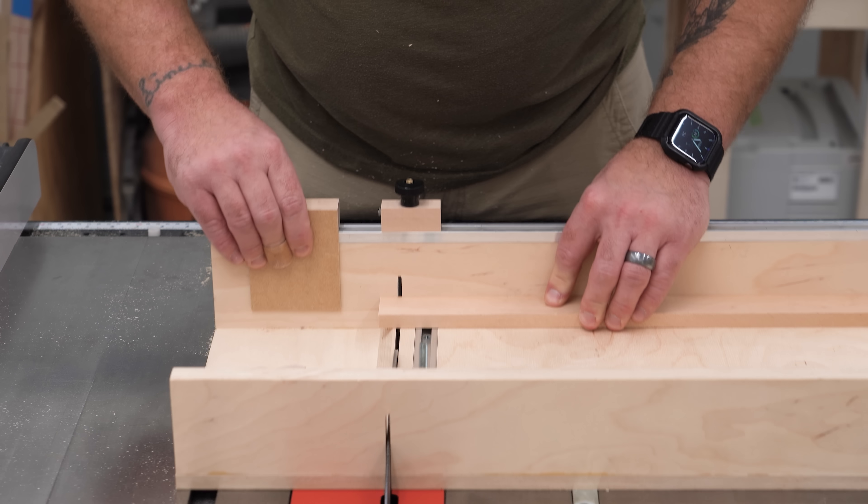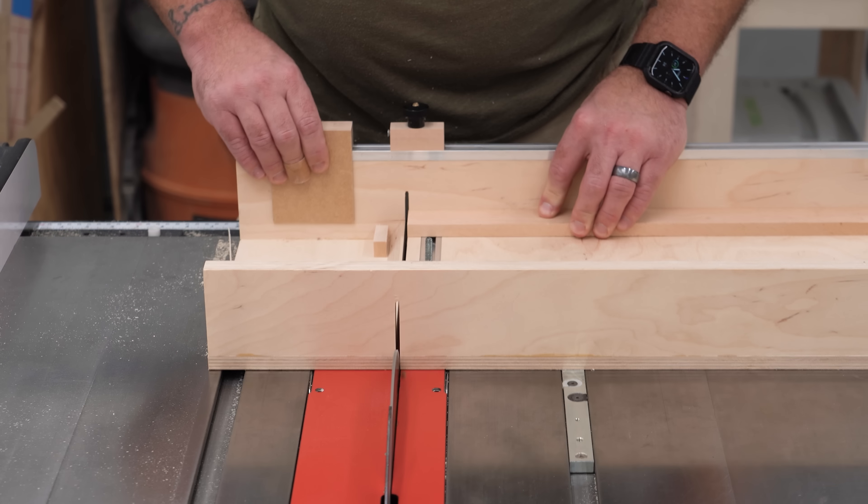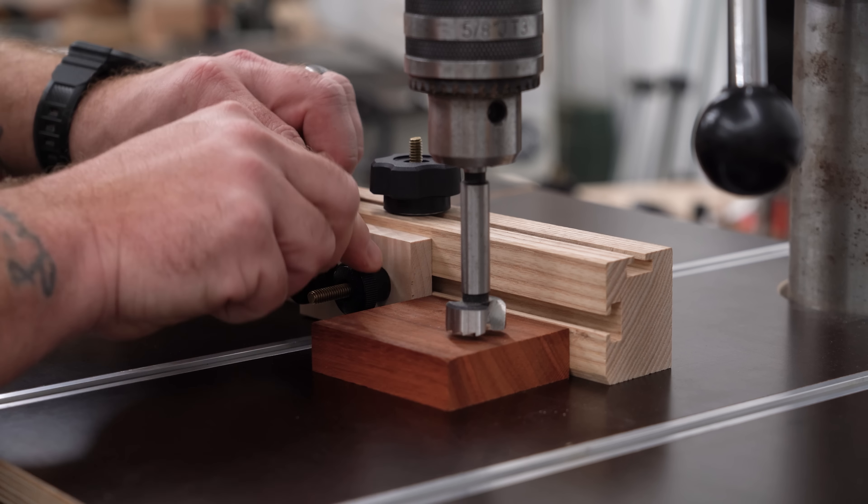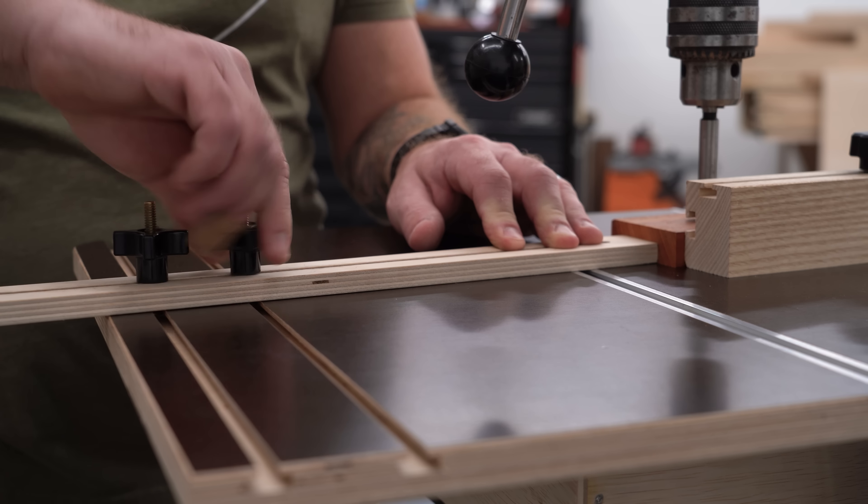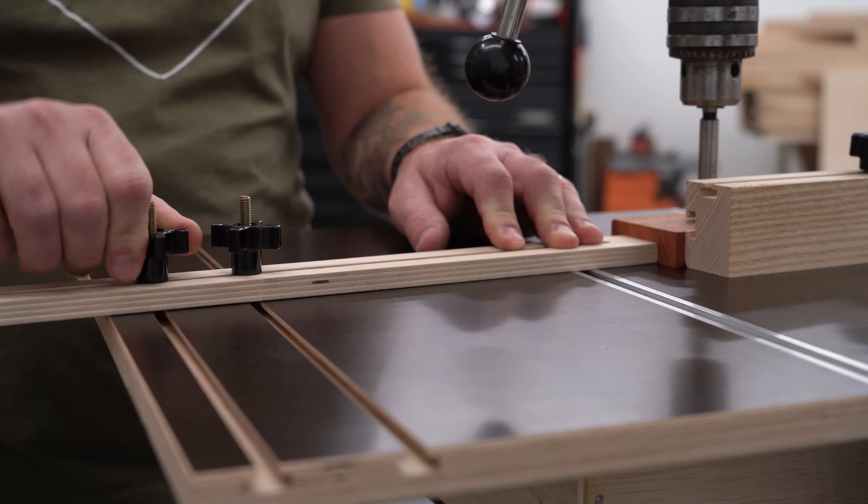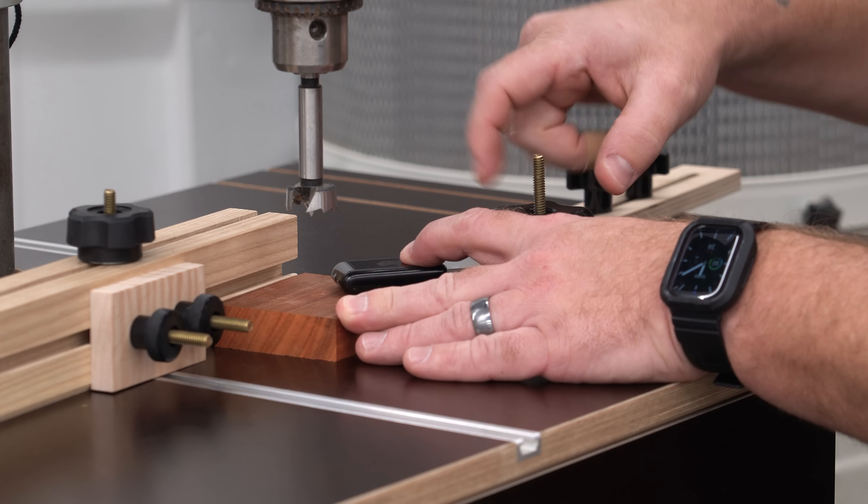So which one's better? In my opinion, both and neither. It just depends on the application. Adjustable stop blocks, cheap and easy is the way to go. Clamping situations where there will be a constant amount of upward pressure being applied without support from the top, aluminum is the only way to go.